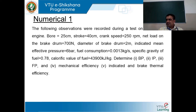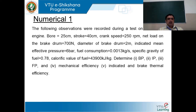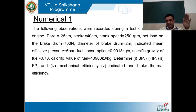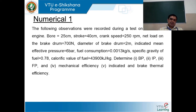To determine indicated power, we need a specific term called mean effective pressure or average effective pressure exerted on the piston. We also need the area of the piston or cylinder, L the stroke or piston displacement, and N the engine speed. The formula to determine indicated power is PM × L × A × N / 60, colloquially referred to as PLAN divided by 60, giving kilowatts, where PM is the mean effective pressure. This is the maximum or total power developed by an engine.